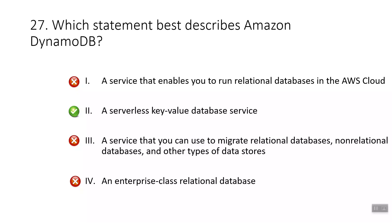Question twenty-seven: which statement best describes Amazon DynamoDB? The answer is Amazon DynamoDB is a serverless key-value database service. Amazon RDS is the service that enables you to run relational databases in the AWS Cloud. AWS Database Migration Service (DMS) is used to migrate relational databases, non-relational databases, and other data stores. Amazon Aurora is an enterprise-class relational database.